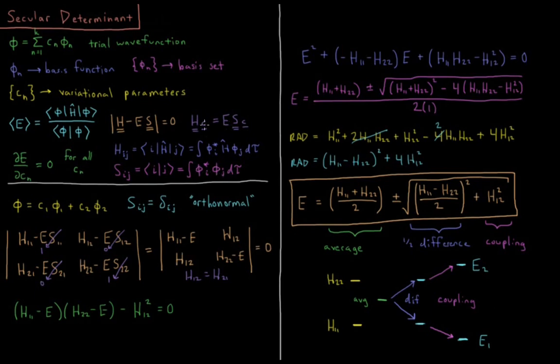To solve this for our energies, we solve the secular determinant equation: determinant of Hamiltonian matrix minus energy times overlap matrix equals zero. That's where we'll start for this video, and we'll continue on and derive some interesting results for the 2x2 case.